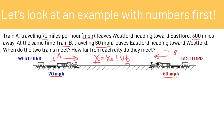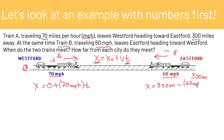Let's set up our equations. We say Westford is at zero and Eastford is at 300 miles. Train A is leaving from zero, traveling in the positive direction at 70 mph, for an unknown time t. Train B is leaving from 300 miles — that's its initial position — moving at negative 60 mph for the same time t. We can solve one equation for time, plug it into the other, and solve for x.